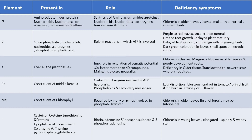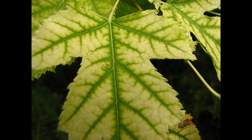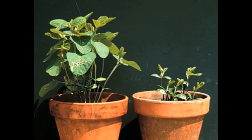Deficiency symptoms are the characteristics shown when an element is deficient. The first symptom is chlorosis in older leaves — chlorosis means the green leaves turn white due to loss of pigment. Leaves are smaller than normal, and plants are stunted, meaning they do not develop much.